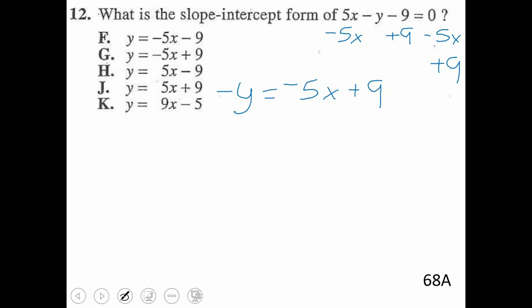And be careful at this point, we are not finished because that was a negative y to start the problem. So we have to get rid of the negative that's still in front of the y. So you would divide this by negative 1, meaning you divide everything on the other side by negative 1. Negative 5 divided by negative 1 makes a positive 5x. Positive 9 and negative 1 is going to make that a negative 9. So we get 5x minus 9, which is H.